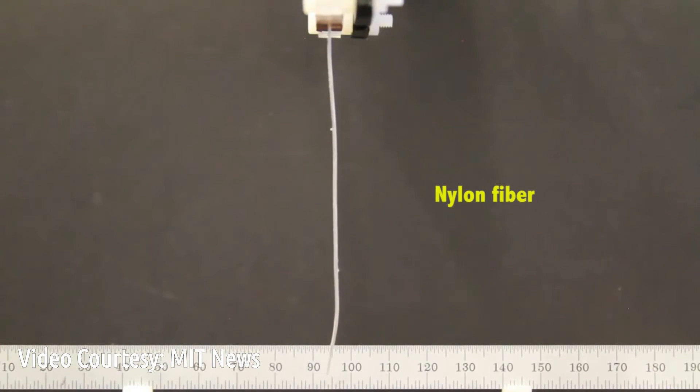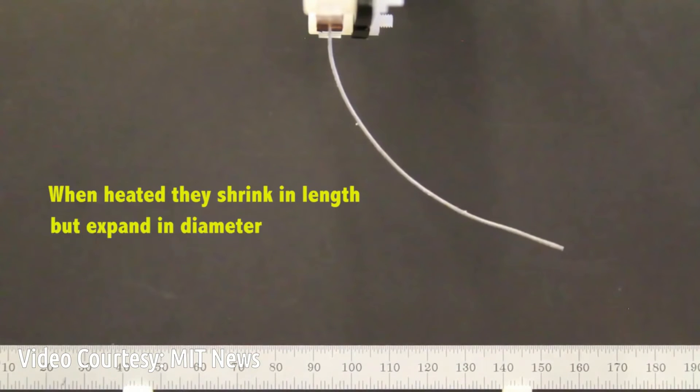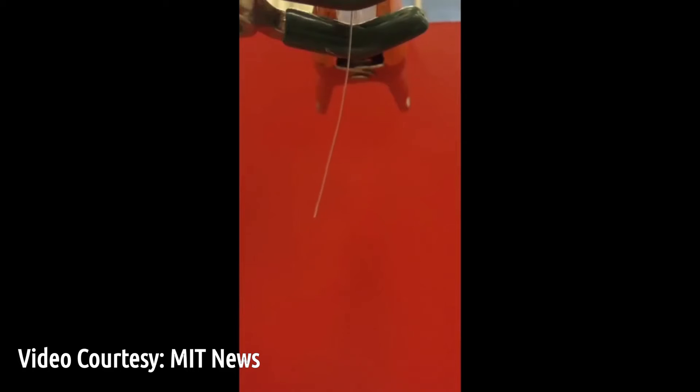It turns out some polymer fiber materials, including a special type of nylon, have an unusual property. When heated, they shrink in length but expand in diameter. The researchers found that by modifying the shape of the fiber and then selectively heating it on one side, they can force the fiber to bend.